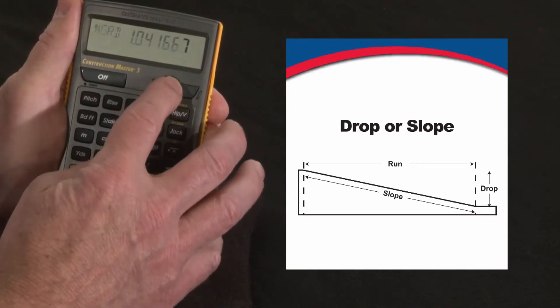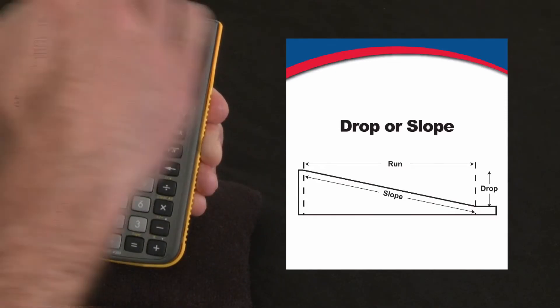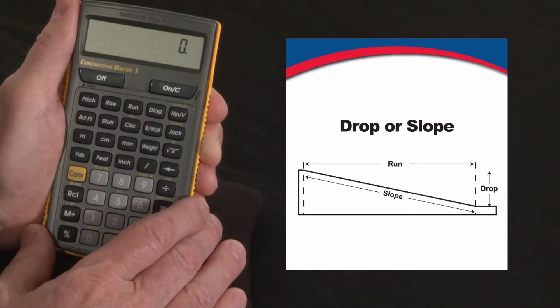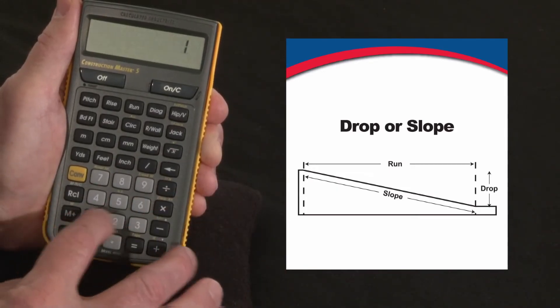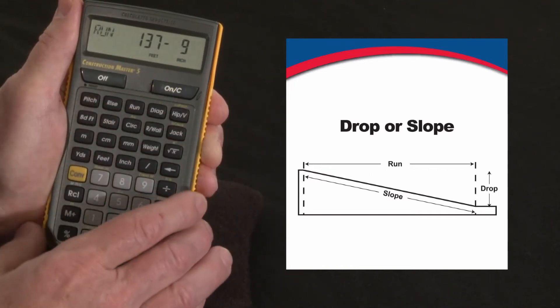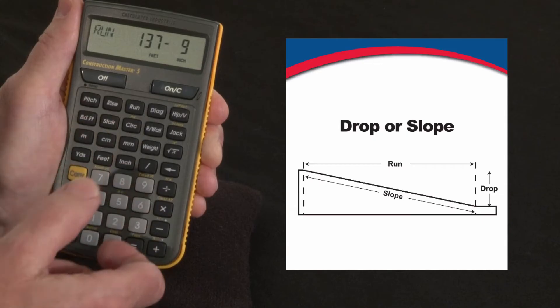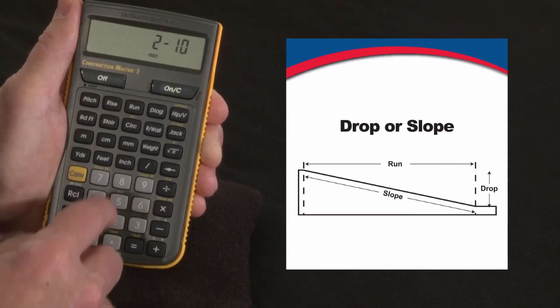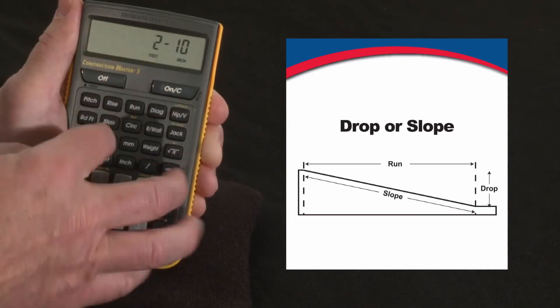Say that you have another situation where you've got a lot and it slopes from the back down toward the street and you're wondering whether it's going to drain or not. You measure it out and it's 137 feet 9 inches is the total run. And you measured it and it's 2 feet 10 inches lower at the other end than this end. 2 feet 10 inches is the vertical change.